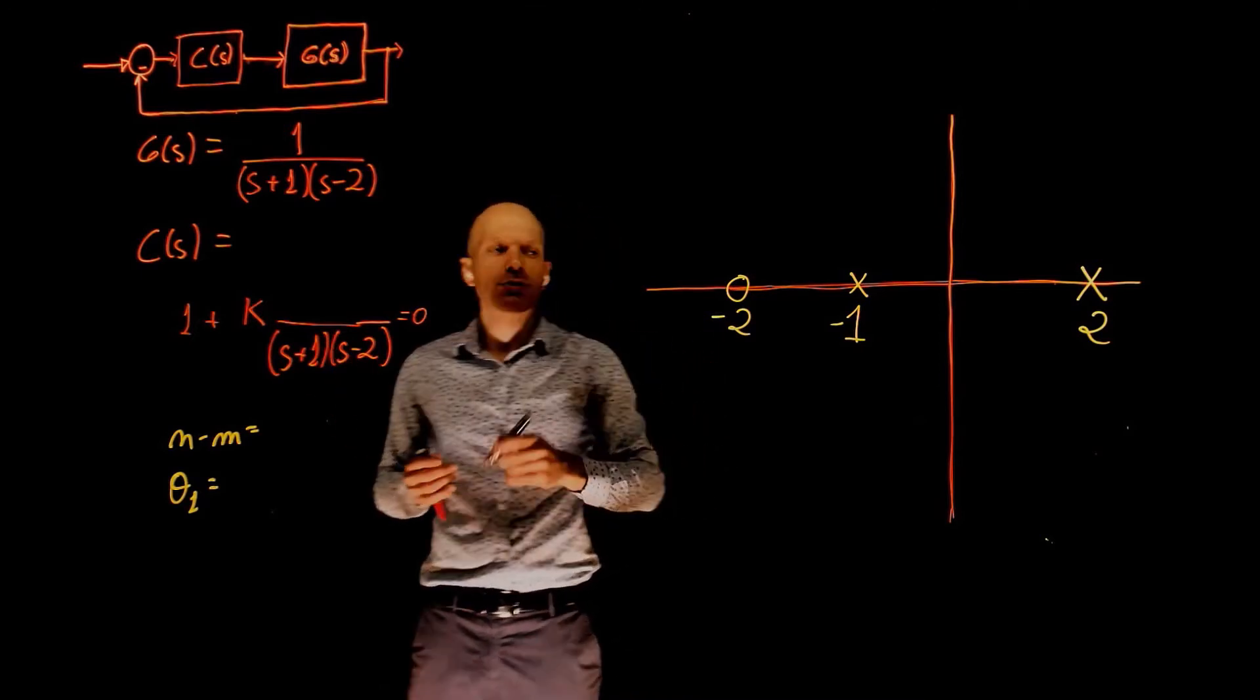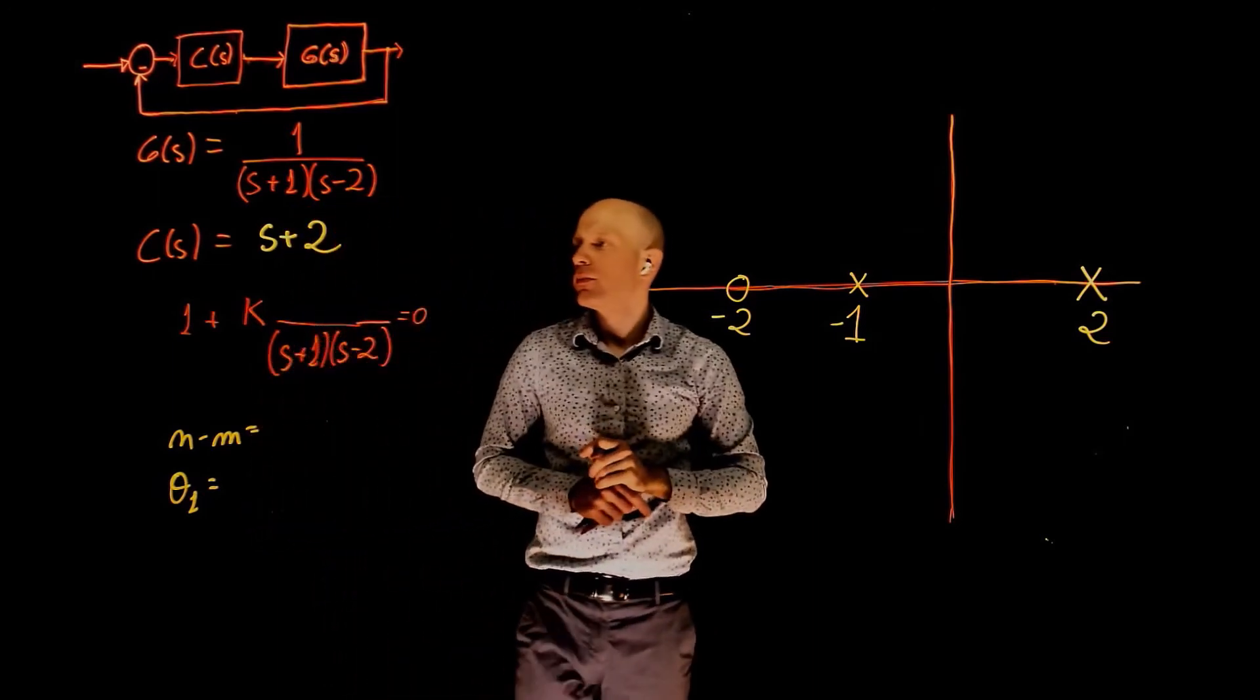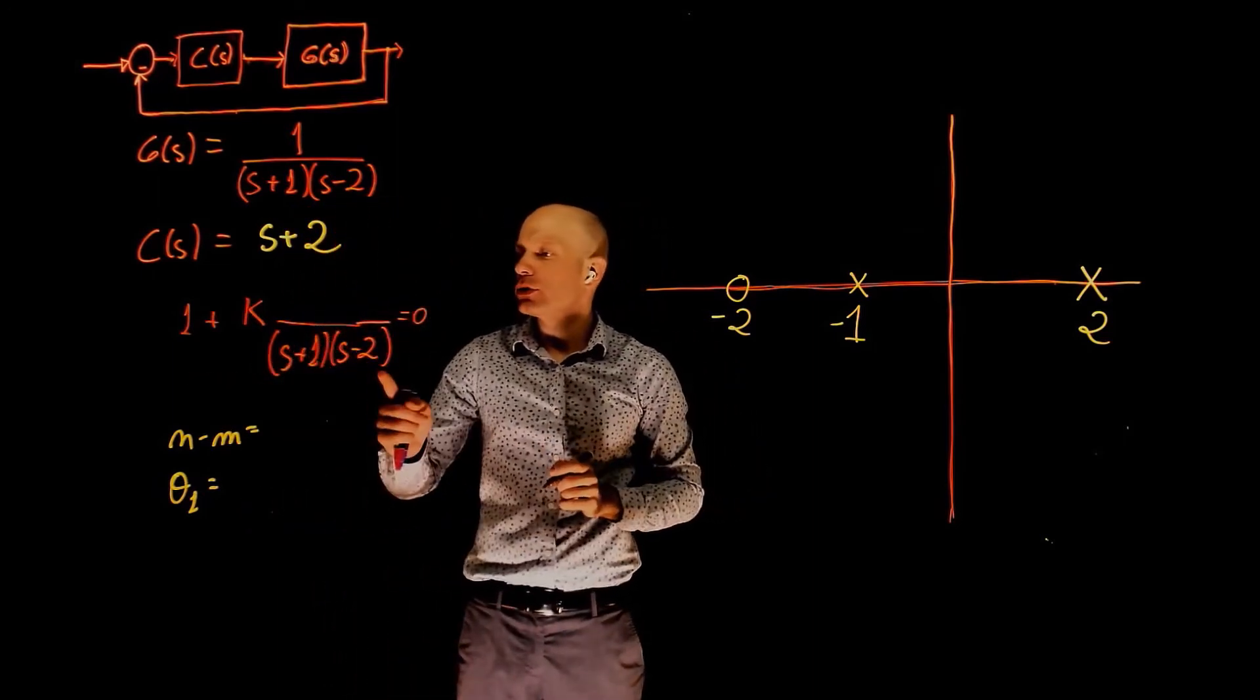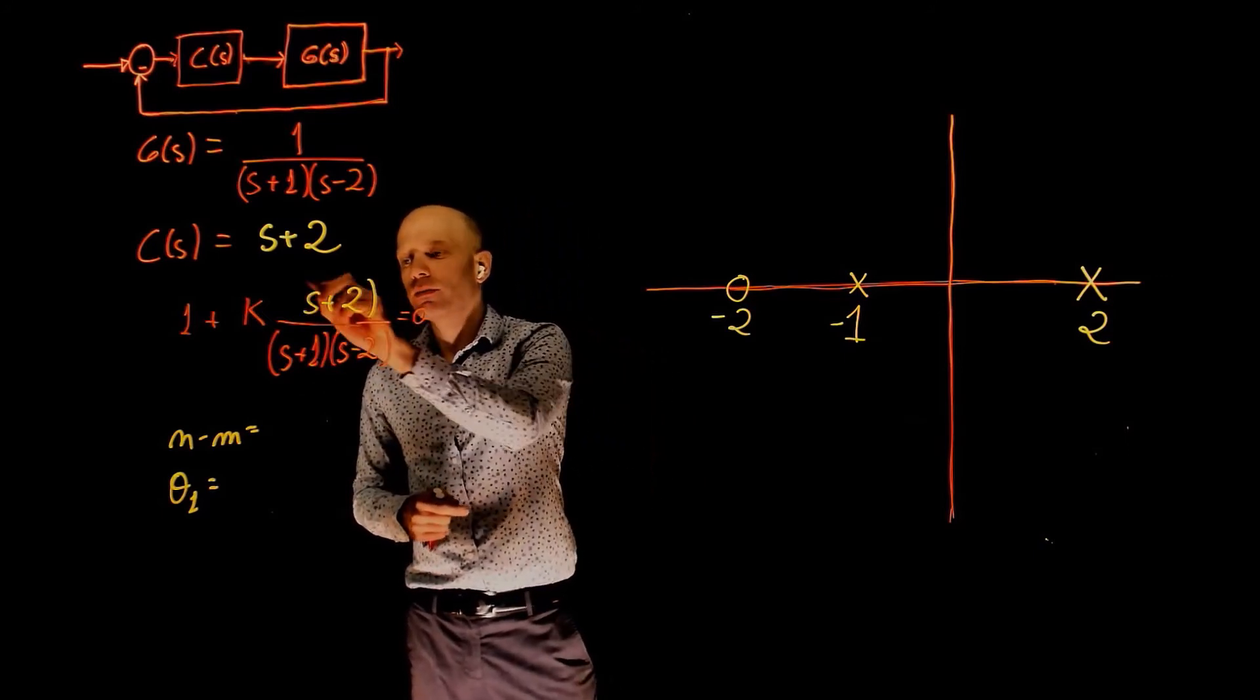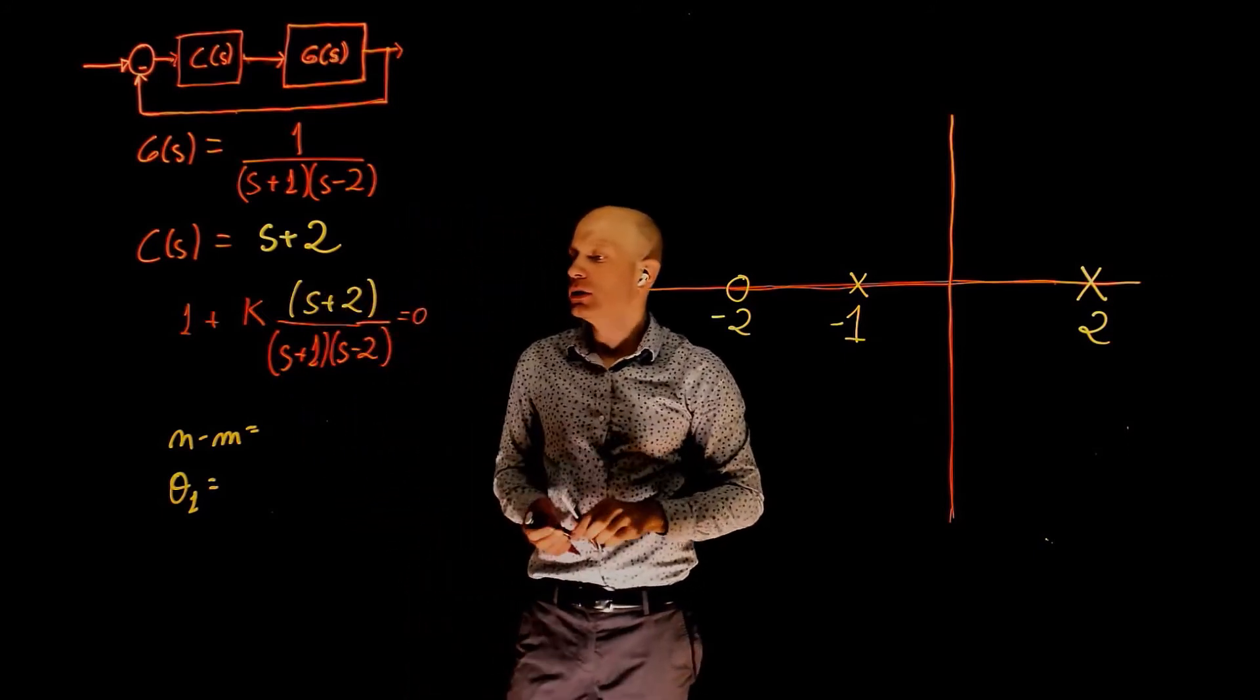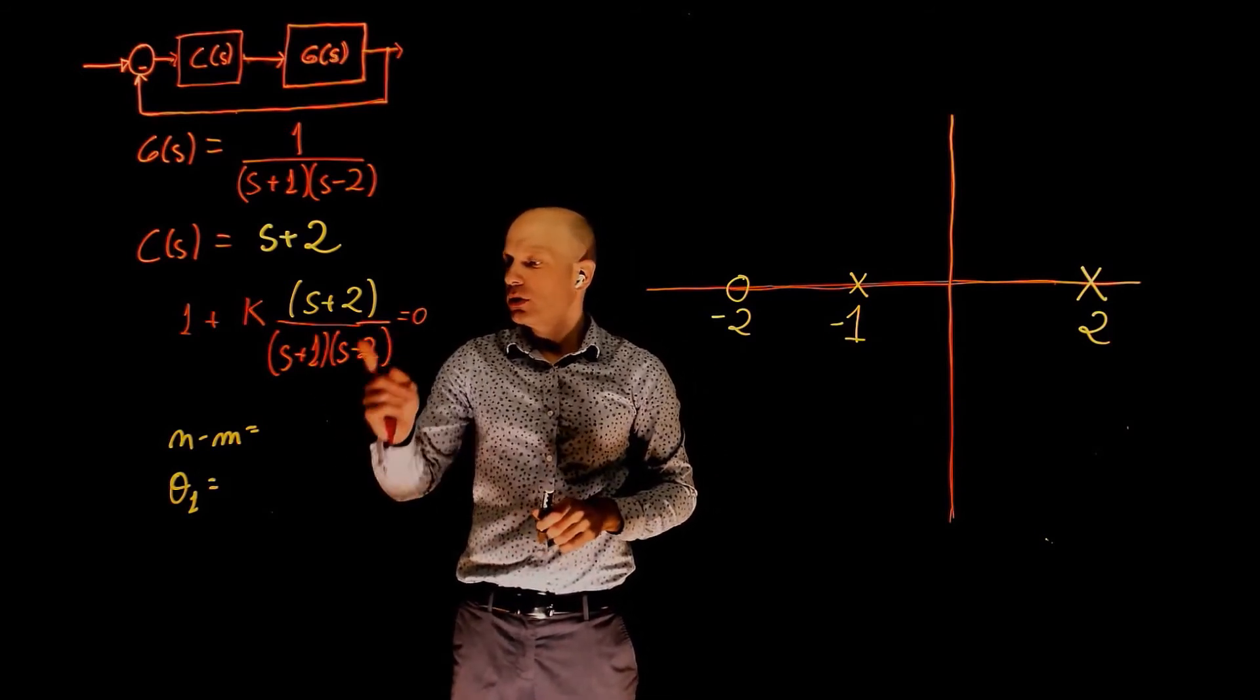If you add a zero at negative 2, now C of s becomes s plus 2. And our characteristic equation is now k times s plus 2 divided by s plus 1 times s minus 2. We now have two poles and one zero.